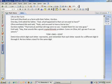Emil and Olive lived on a farm with their father, Gordon. One day, Emil asked his father, Dad, what happened to that cat we used to have? Olive overheard this and said, Yeah, and we used to have a horse, too.